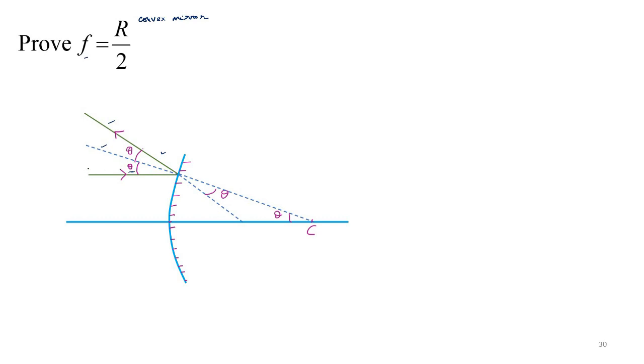Corresponding angles. Because you can consider this and this. This line, you know, which is represented by the incident ray and axis, they are parallel. And this happens to be the transversal. So this is corresponding angle. Angle of incidence is theta. This angle is also theta corresponding angle.